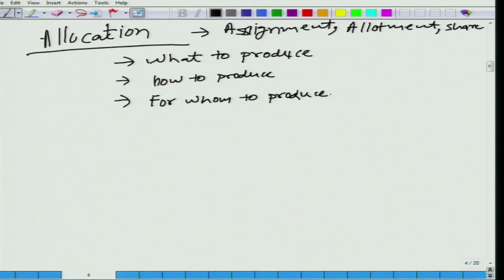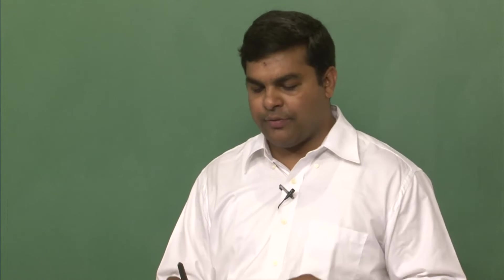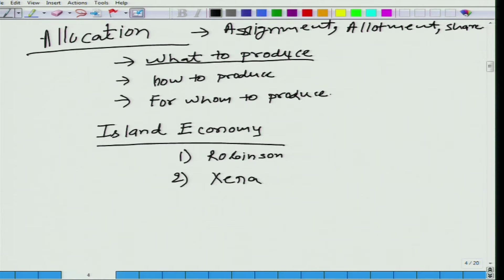Let us talk about the first question: what to produce. Let us answer these three questions one by one, starting with what to produce. Let us imagine a very simple economy — we will time and again in this course assume a very simple version. Let us talk about an island economy. This island economy is populated by only two individuals: one is Robinson Crusoe and the second is Zena, the warrior princess. Names are immaterial, just to make the story interesting.